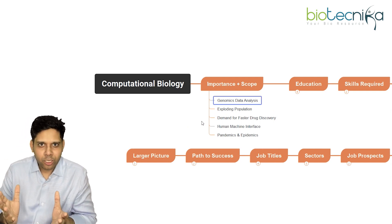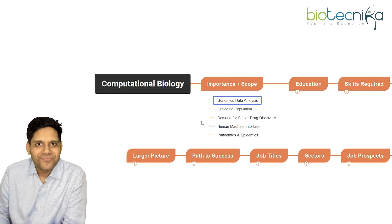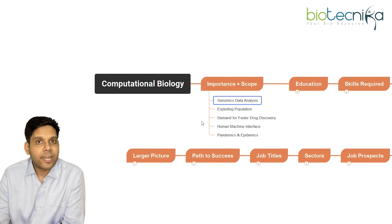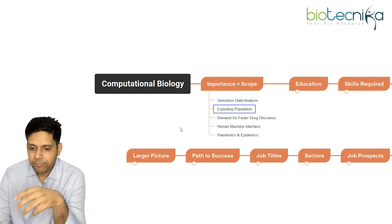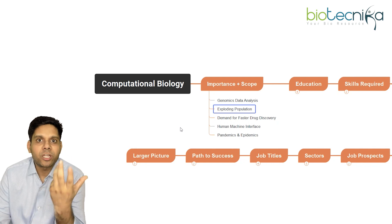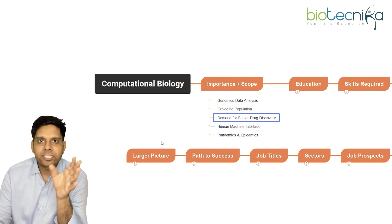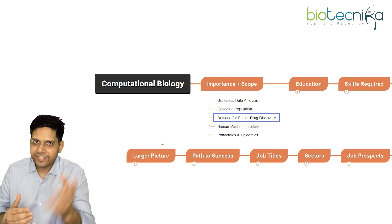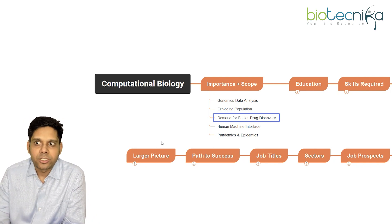With the advent of technology, more and more genomics data is becoming available today, and analysis of that data is a major need. Genomics data analysis is one area that is very scopic and growing. The population is exploding, meaning newer avenues for applying computers in biology are coming up. There is a huge demand for faster drug discovery because microbes are getting smarter, so we need computers to develop better, faster drugs with much more efficacy.